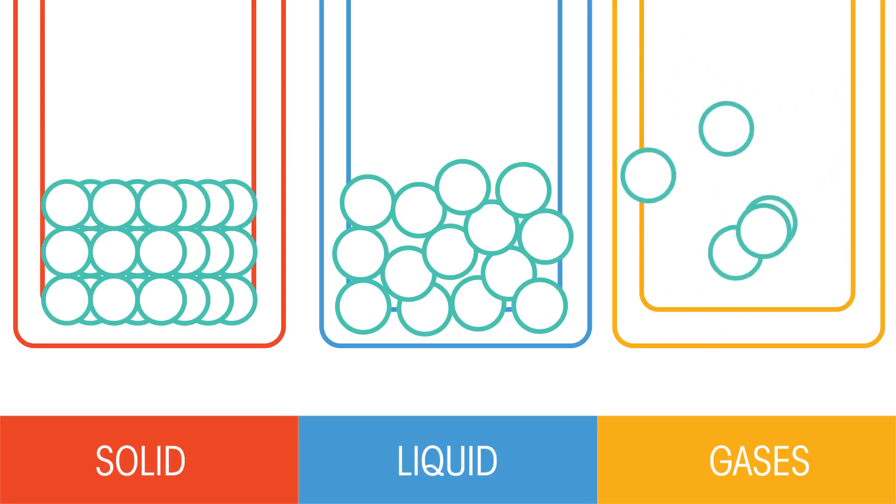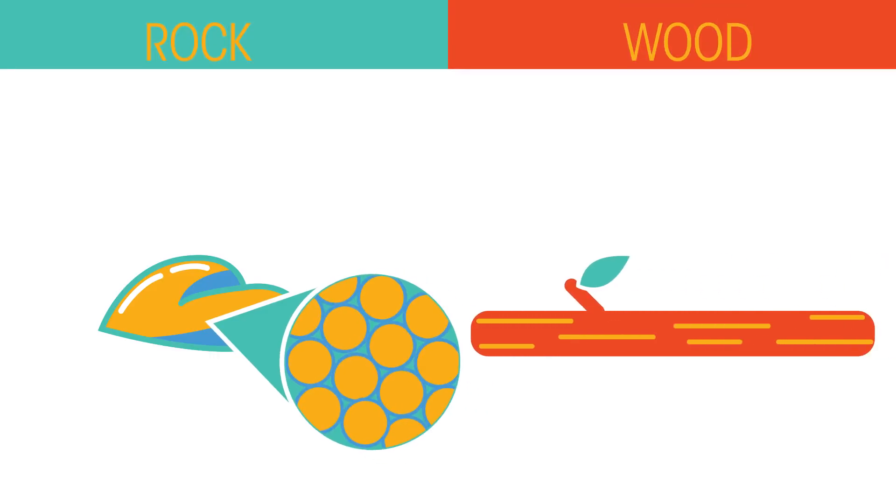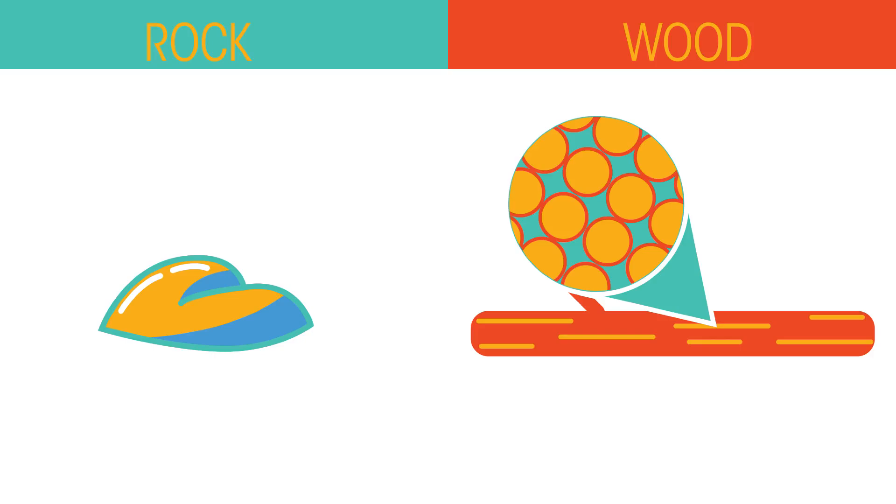Inside each object are atoms and molecules. How closely these atoms and molecules are packed together determines the density. In the rock, the molecules are squished tightly together, whereas in the wood, they are more spread out, and in air, much more spread out.